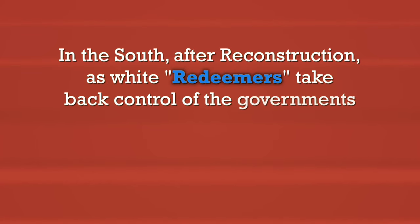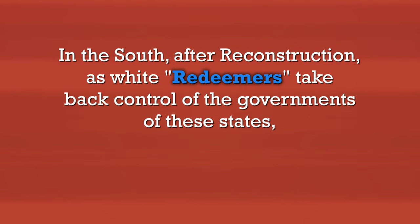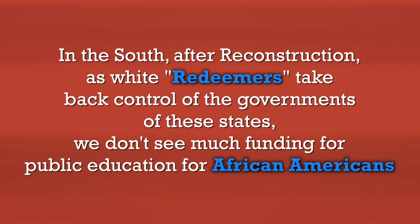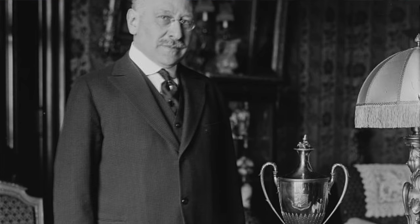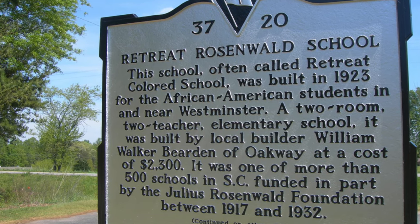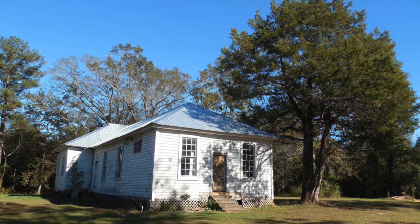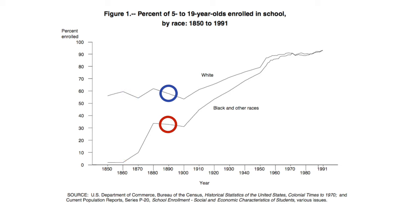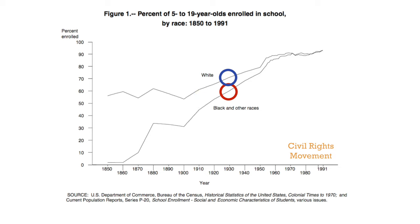The common school movement sweeps the nation, giving us all those one-room schoolhouses. These build out first in the North and Midwest, and after the Civil War, increasingly in the South. In the South, we have to particularly understand the history of race and education. After Reconstruction, as white redeemers take back control of state governments, we don't see much funding for public education for African Americans. That's one reason for the rise of philanthropists from the North, like Julius Rosenwald — a Sears and Roebuck tycoon — who creates the Rosenwald Fund, a matching grant program whereby African Americans can raise local money, supported by the fund and some state tax money, to build schools across the South. A chart shows the long catching-up that takes place in school enrollment for African Americans, and it's really not until after the Civil Rights Movement that those lines come together.